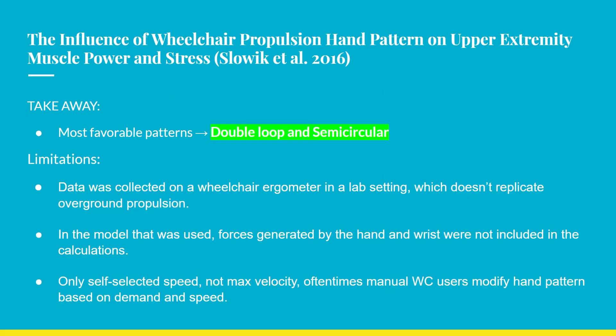The takeaway from the study was that when it comes to muscle power and stress, the most favorable patterns are the double loop and the semicircular. Limitations included that data was collected on a wheelchair ergometer in a lab setting, which doesn't replicate overground propulsion; forces at the hand and wrist were not included in simulations; and only self-selected speeds were used, not max velocity — which matters since manual wheelchair users often modify hand position based on speed and demand.